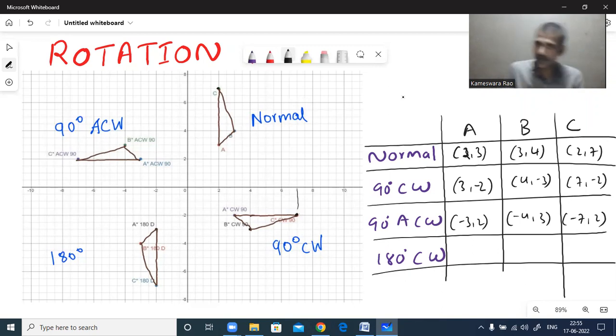Suppose if you want to rotate the same object 180 degrees clockwise direction, then we have to write additive inverse. Minus 2 comma minus 3. For x comma y minus x comma minus y. Where it will lie? Both are negative means quadrant 3. Minus 3 comma minus 4. Minus 2 comma minus 7. Check once: minus 2 comma minus 3, minus 3 comma minus 4, minus 2 comma 7. Right. 180 degrees clockwise.